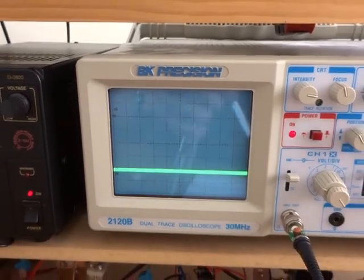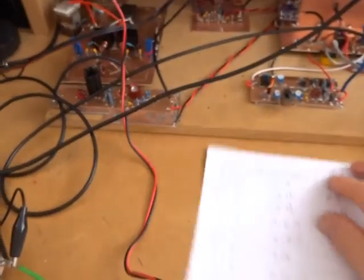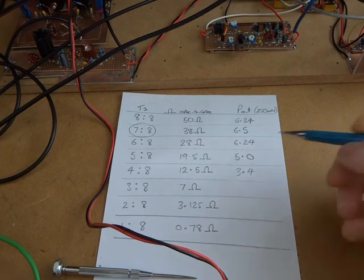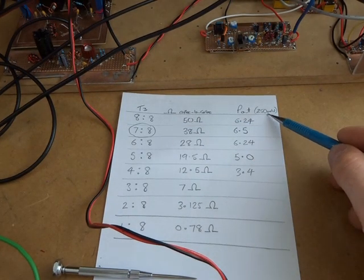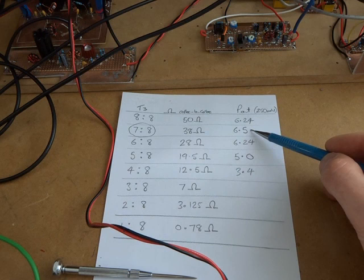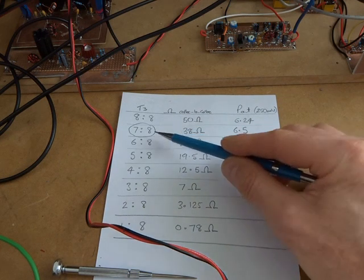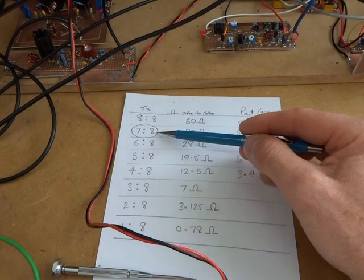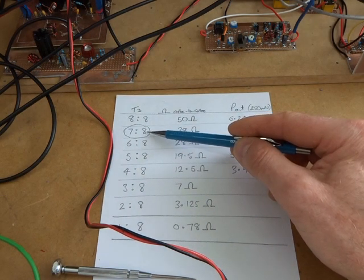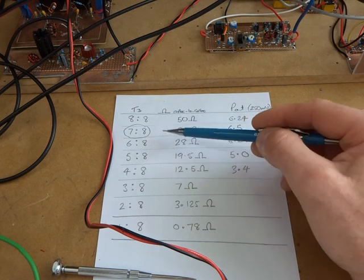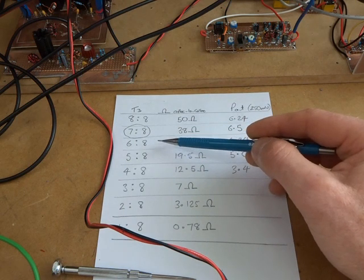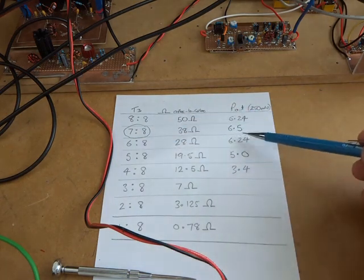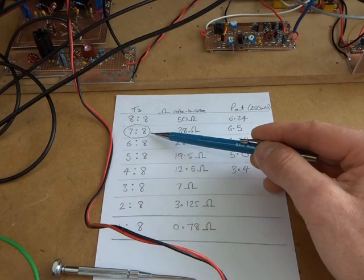So that's what we basically got there. 8 to 8 with 6.24 watts for our 250 milliwatts in, and we can see the sweet spot, the highest point, was with a ratio of 7 to 8. You could try increasing the turns on the secondary to get a finer grade, but in terms of actually trying to squeeze the wire into the binocular core, that's probably about right.